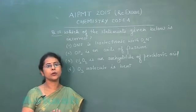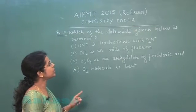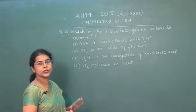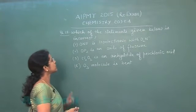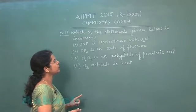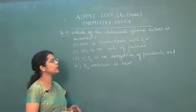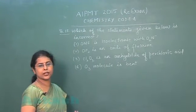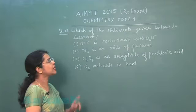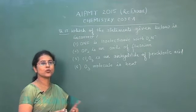Next question, question number 18. Which of the statements given below is incorrect? First statement is ONF is isoelectronic with O2N negative, that is NO2-. Isoelectronic species are those species which have same number of electrons, so this statement is correct.